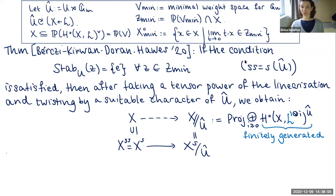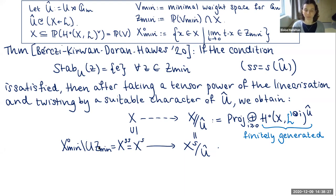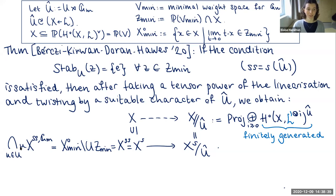Just as in classical GIT, we ask on what open subset the rational map from X restricts to a morphism. The reason for calling this condition 'semi-stability equals stability' is that the projective quotient ends up being an orbit space for the action of Û on the semi-stable locus. The semi-stable locus can be described very explicitly: it is X^{0,min} minus the U-sweep of Z_min. This is the analogue of the Hilbert-Mumford criterion of classical GIT; equivalently it is the intersection of the semi-stable locus for the G_m action with respect to the modified linearization L′.